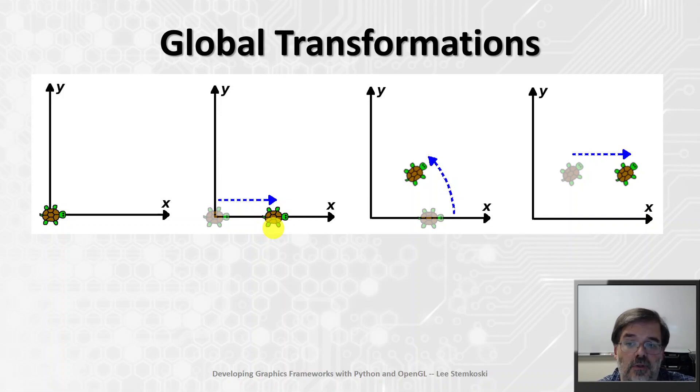And you could continue to transform this object. For example, if you had a rotation matrix, say rotation around the origin by 45 degrees, you could multiply the points by that rotation matrix. You'd have this picture here, and then you could multiply by the translation matrix again, and you'd end up with this position and orientation here.